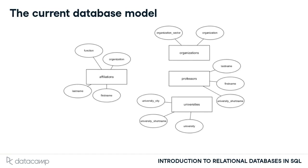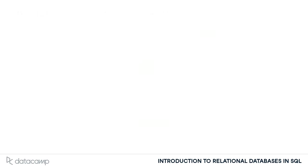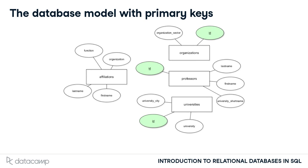In the last chapter, you specified attribute constraints — first and foremost data types. You also set not null and unique constraints on certain attributes. This didn't actually change the structure of the model, so it still looks the same. By the end of this chapter, the database will look slightly different.